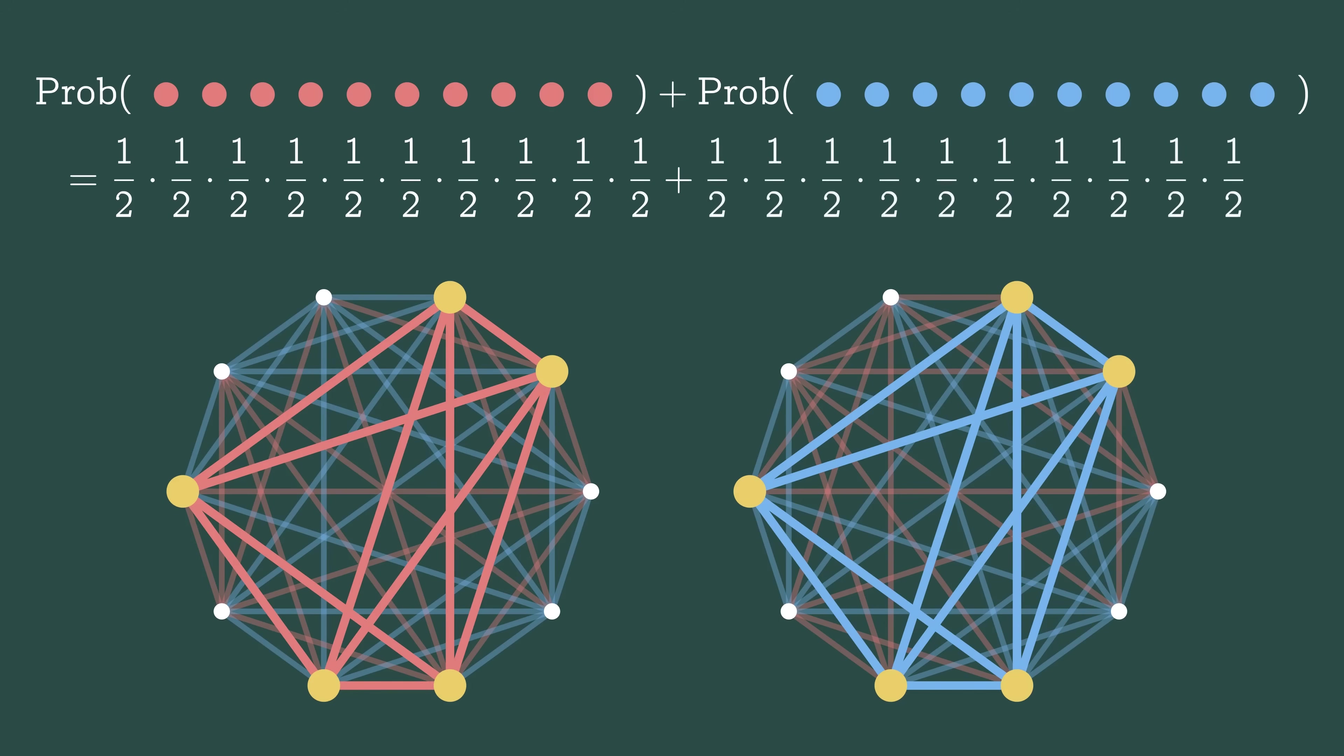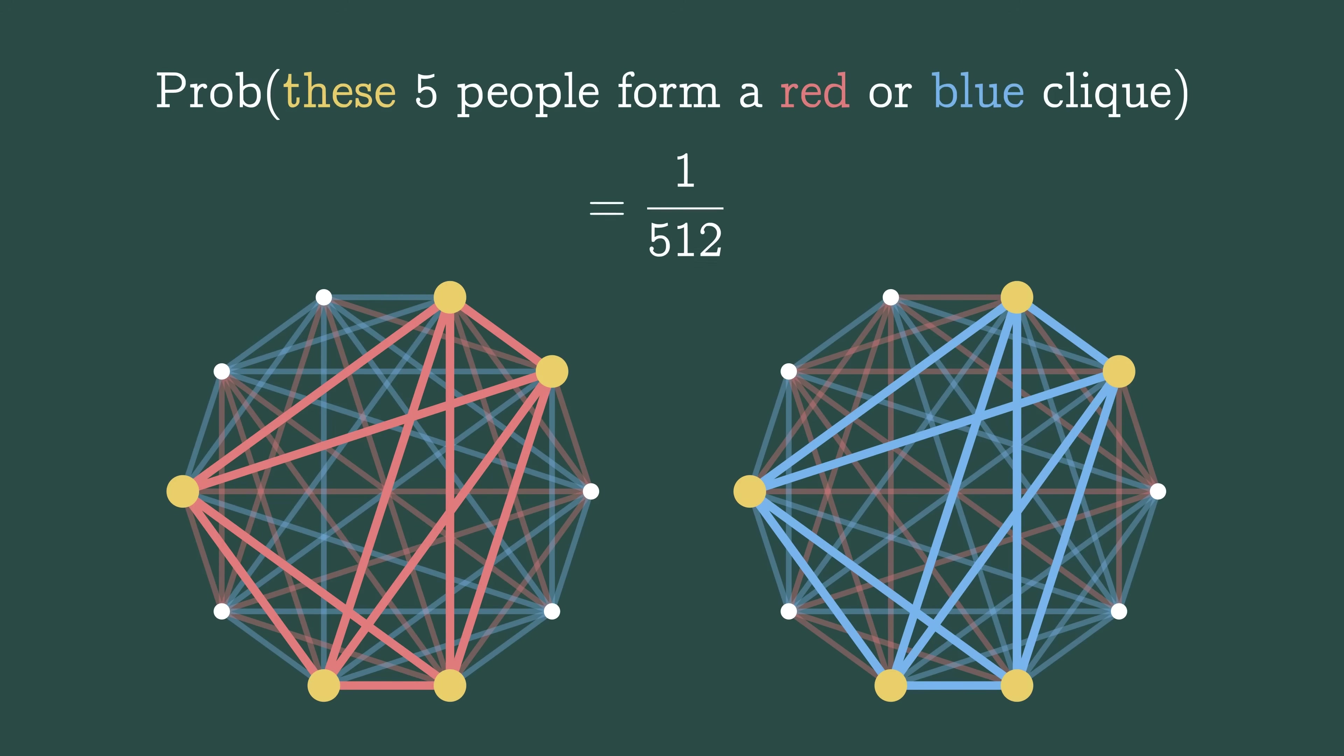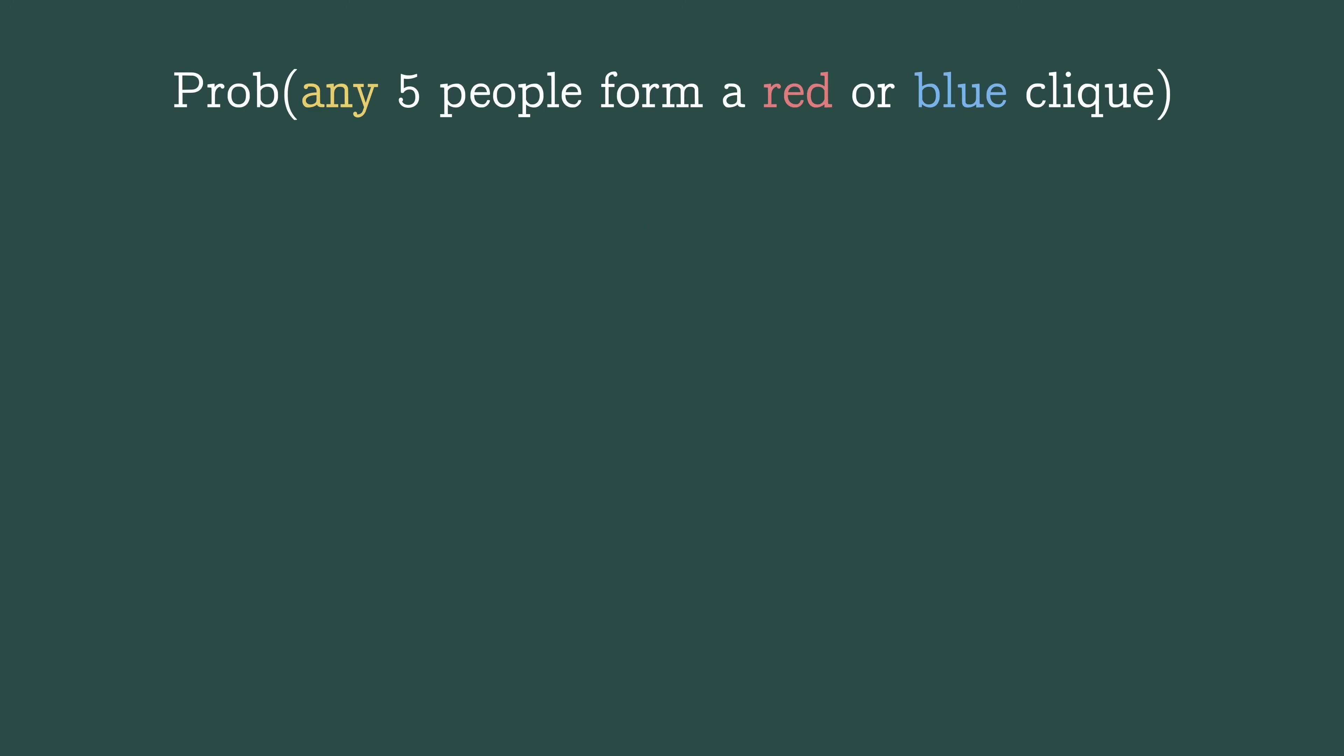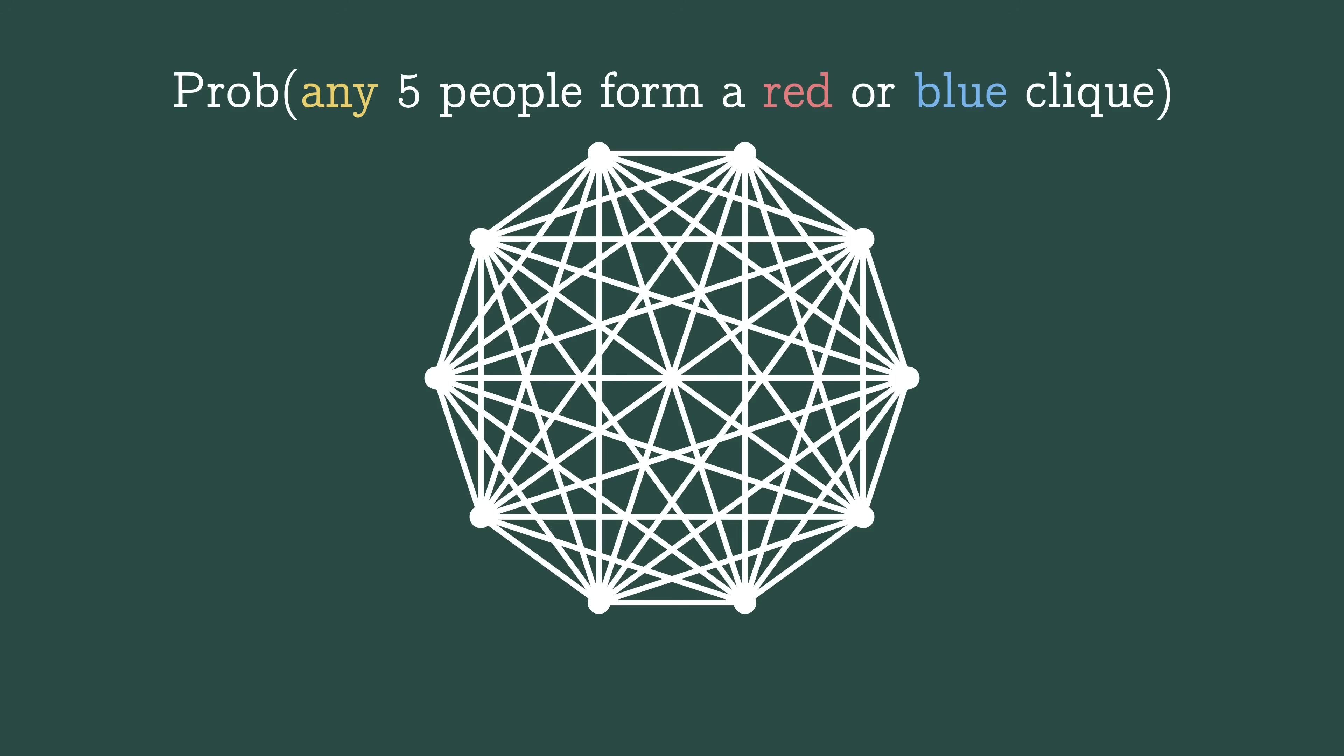That's 1 half to the 10th plus 1 half to the 10th, or 1 over 512. That's the probability that these five specific people form a clique, but let's go bigger. What's the probability that there's a five person clique anywhere within this graph?